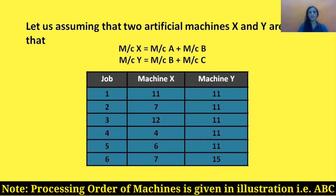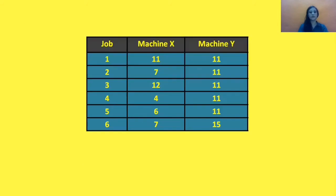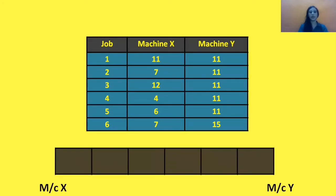In this table, you can see that after adding the processing time of machine A and B, we get the time for machine X, and similarly for machine Y. Now with these processing times of artificial machines X and Y, we will go for sequencing of the jobs. We are making a grid of 1 by 6 because we have 6 jobs in total, with machine X at the left hand side and machine Y at the right hand side. We need to identify the minimum processing time irrespective of the machines.